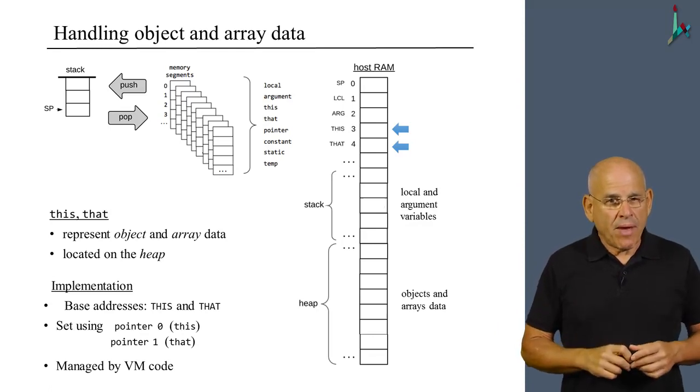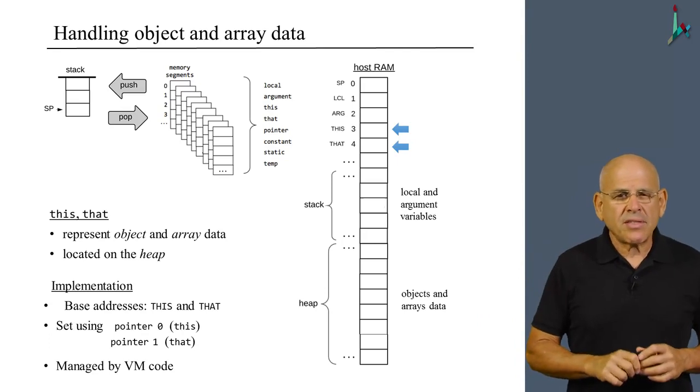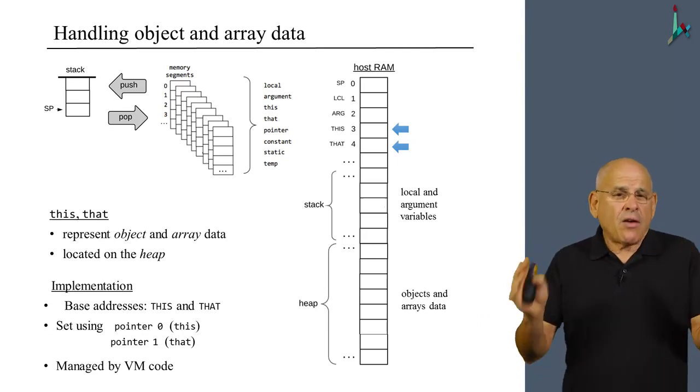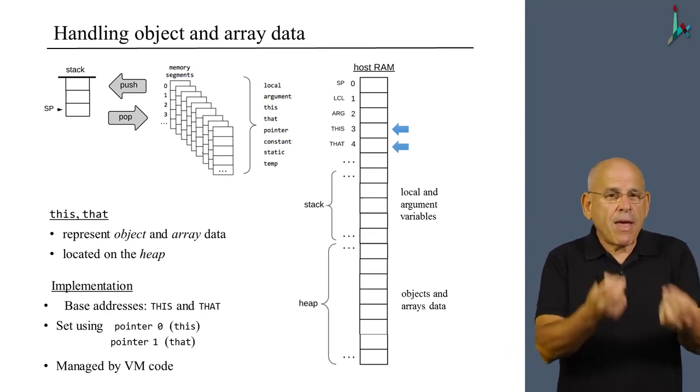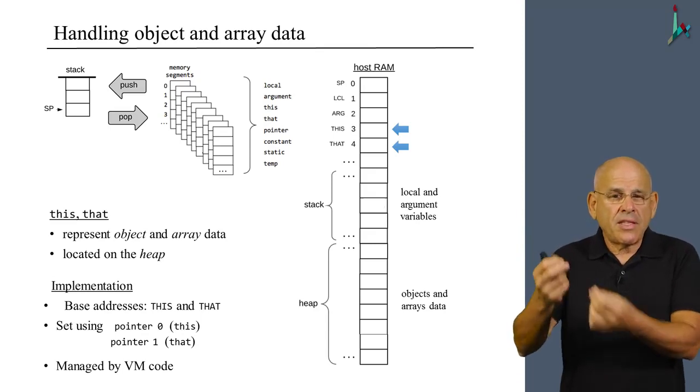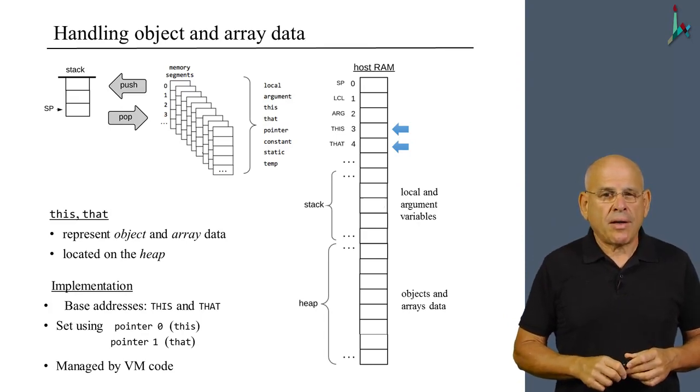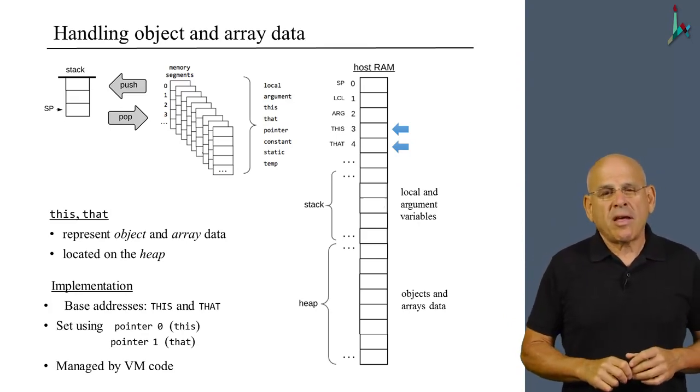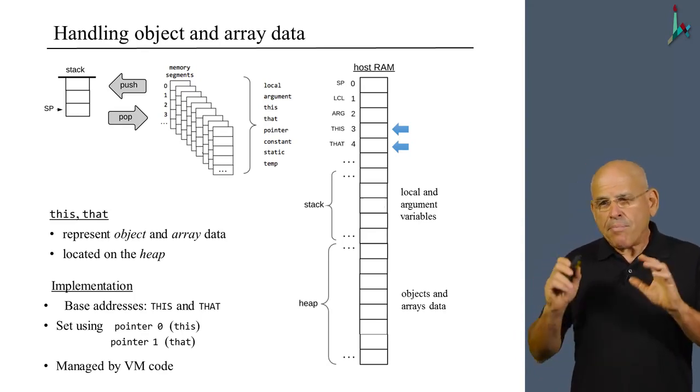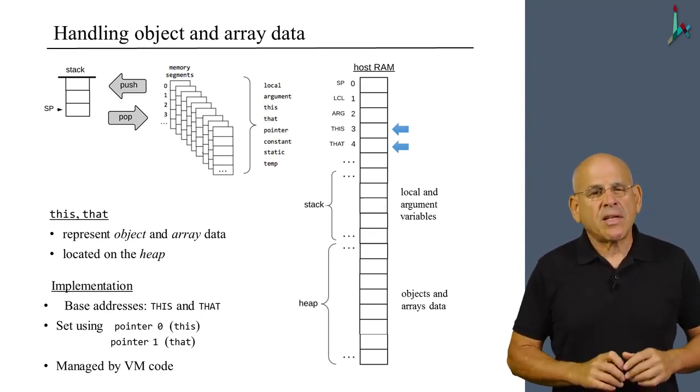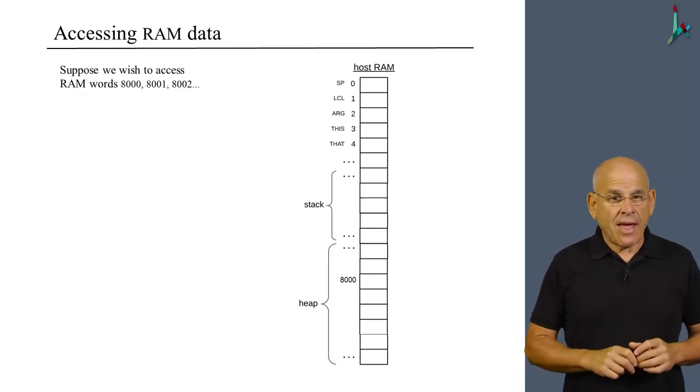This should be handled using VM commands. You may ask yourself, why do we have to use the pointer segment in such a way? Well, that's how Noam and I decided to design this architecture. We had to provide a mechanism to anchor this and that on the particular object and array that the code has to operate on, and we're using this virtual segment pointer for this purpose. I bet that some of what I just said sounds a little bit obscure or esoteric. I think the following example will clarify everything.